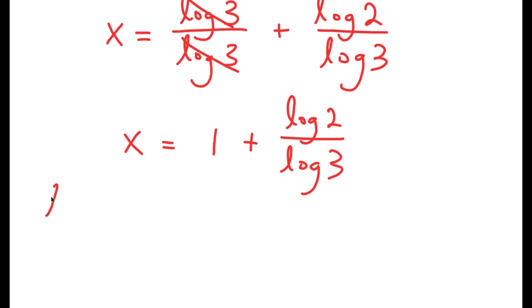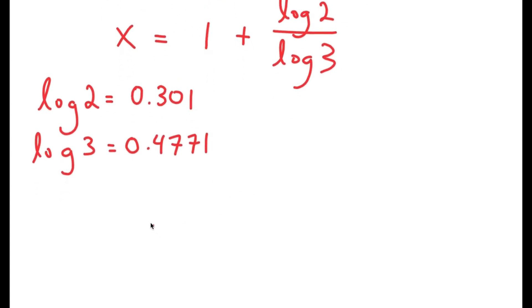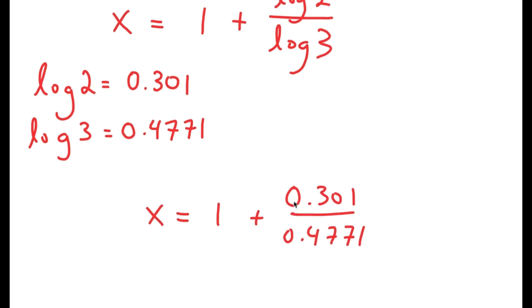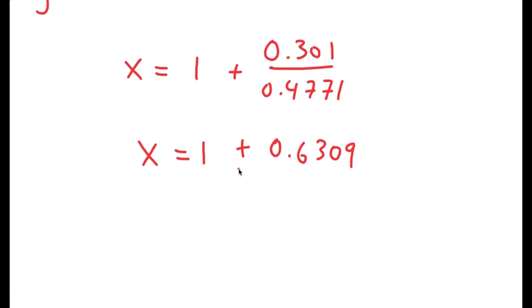Now, log of 2 is equal to 0.301 and log of 3 is equal to 0.4771. So I get x is equal to 1 plus 0.301 over 0.4771. And 0.301 over 0.4771 is 0.6309. So I have x is equal to 1 plus 0.6309, which is equal to 1.6309. So this is my solution.